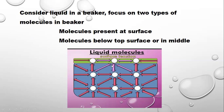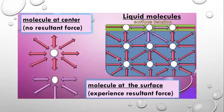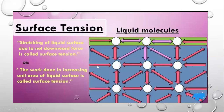Here we see a downward force which is not balanced by any upward force. So all these surface molecules experience a net inward or downward force, which is called surface tension. When all the surface molecules experience such a force, that force experienced by the surface molecules is called surface tension. The molecule in the middle has no resultant force, and the molecule at the surface experiences a resultant downward force.